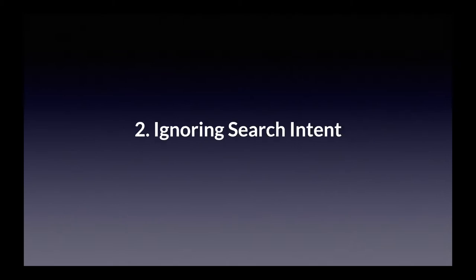SEO mistake number two: ignoring search intent. Another mistake people make in SEO is failing to understand search intent, also known as searcher intent and keyword intent. This is the purpose behind the search query — what is it that people are looking for when they type that keyword or keyword phrase into Google? Broadly speaking, when people go to a search engine, they type in one of three different kinds of search queries.